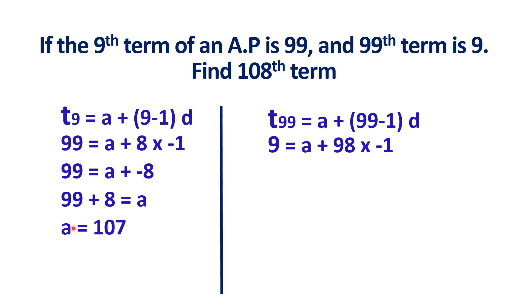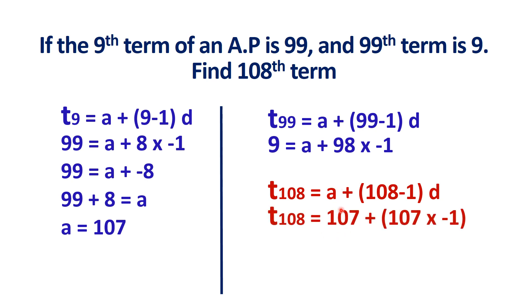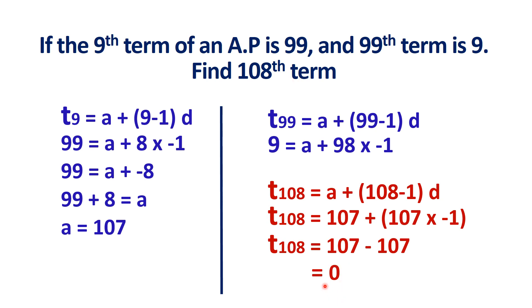Now we apply A and D in the formula to find the 108th term. T108 equals A plus 108 minus 1 into D. With A equals 107, D equals minus 1, and 108 minus 1 equals 107: T108 equals 107 minus 107, which equals 0. The 108th term in this arithmetic progression is 0.